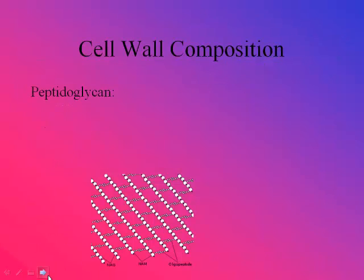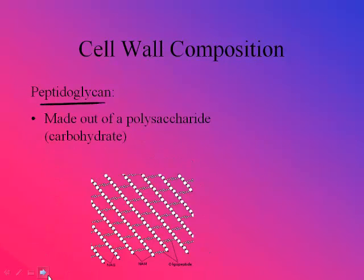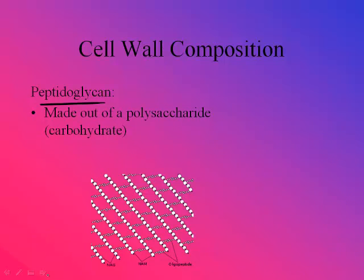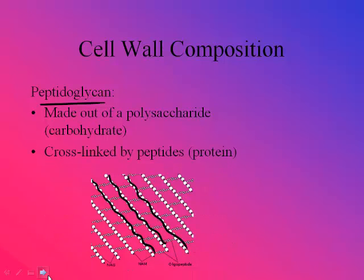Cell wall composition: we have this word peptidoglycan. All that means is that it's a carbohydrate — a polysaccharide — and it's cross-linked with peptides. That's where you get the 'pepto' or 'pepta,' and then 'glycan' is the polysaccharide. This gives structure to the cell wall of the bacteria.